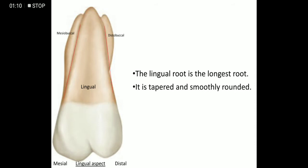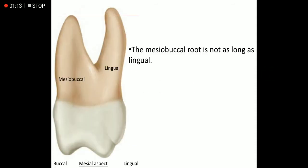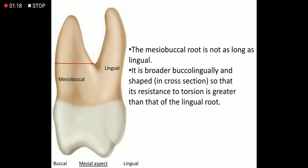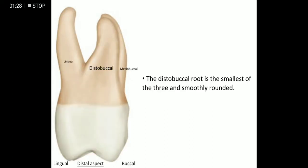The lingual root is tapered and smoothly rounded. The mesobuccal root is not as long as the lingual root; it is broader buccolingually and shaped so that its resistance to torsion is greater than that of the lingual root. The distobuccal root is the smallest of the three and is smoothly rounded.